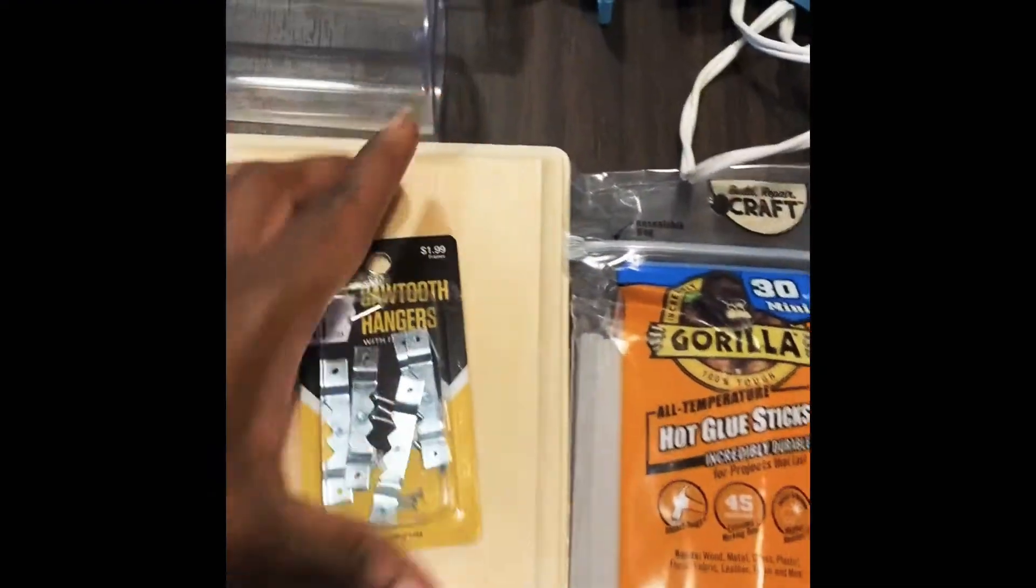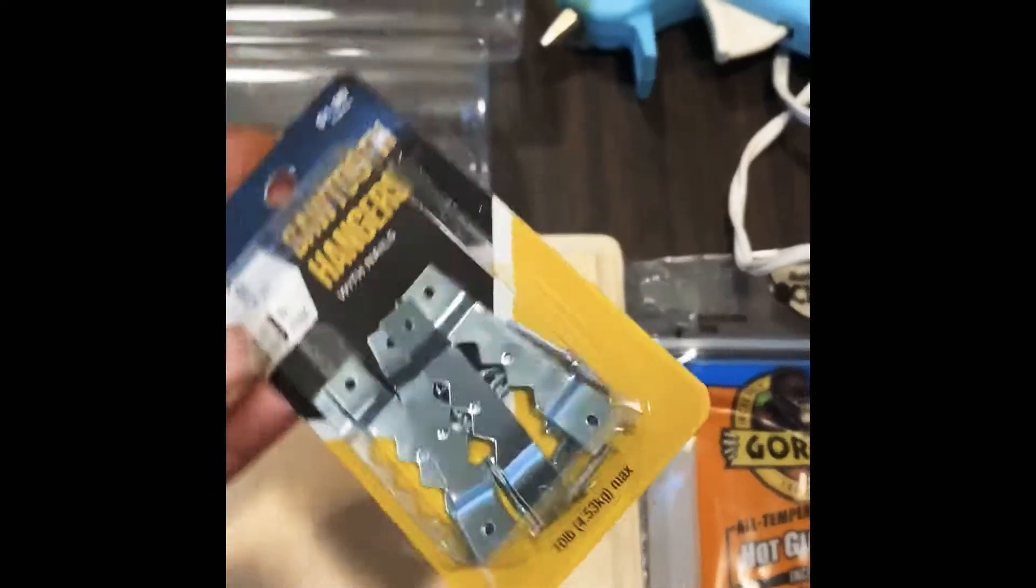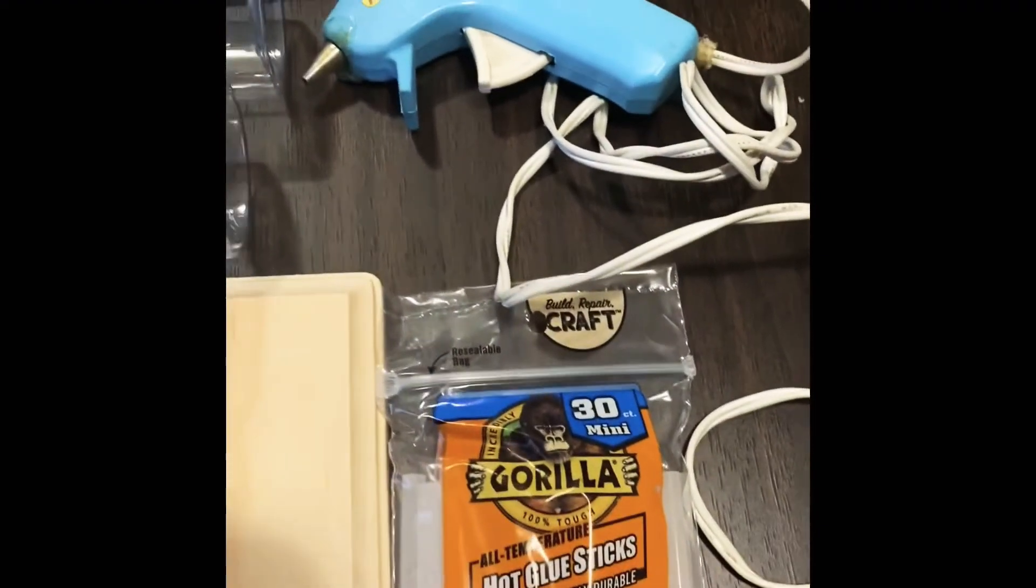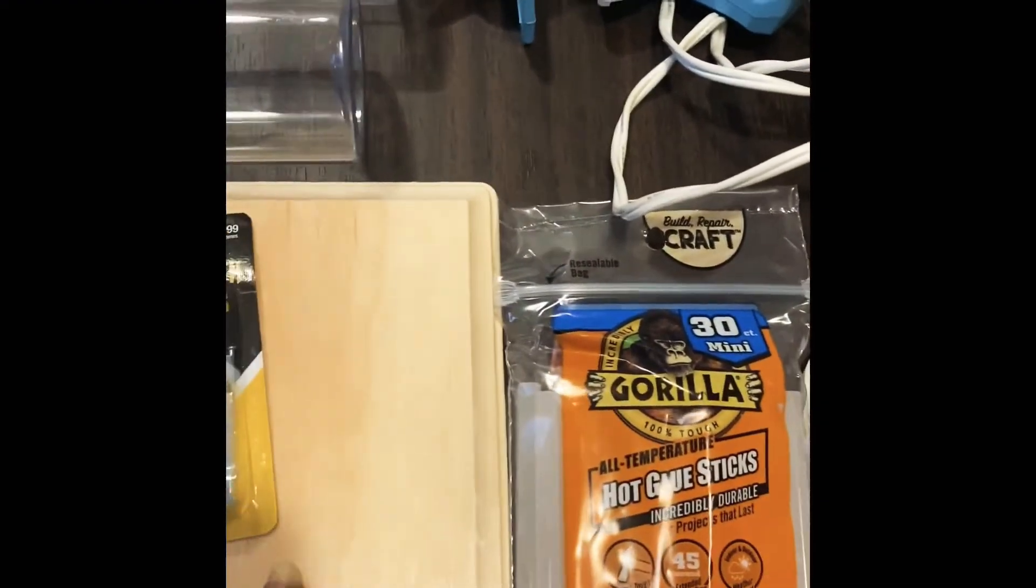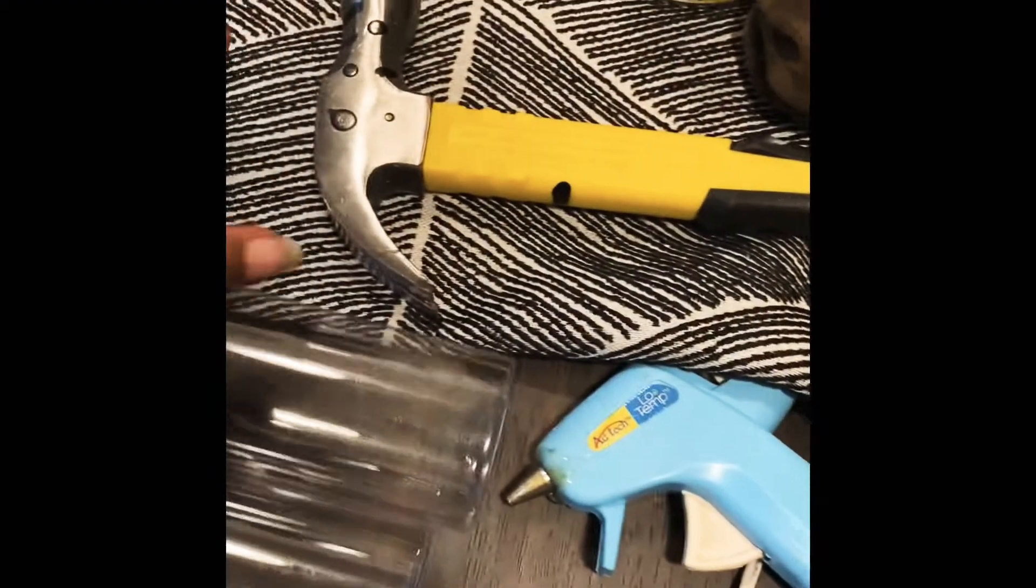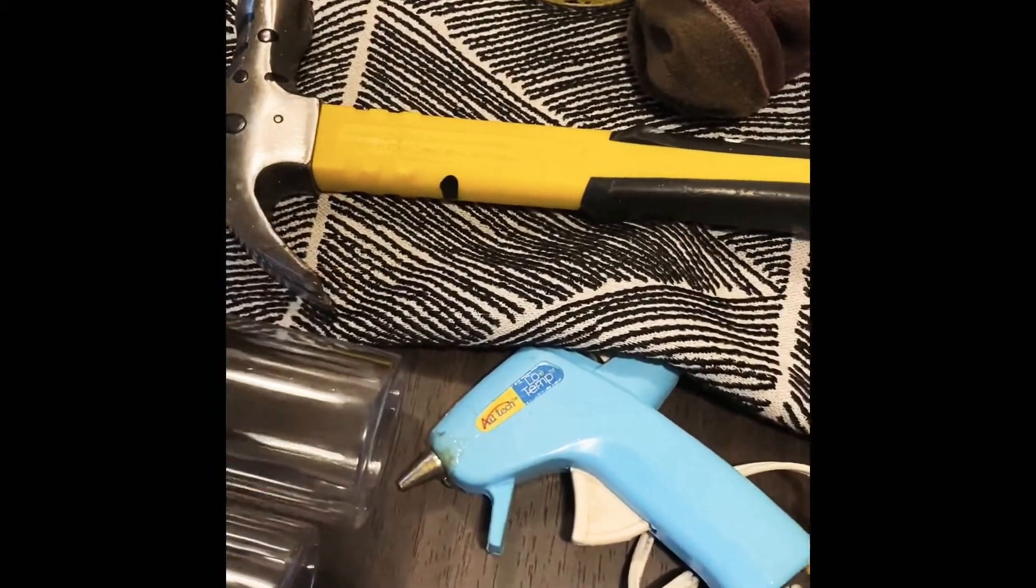I got my magnets, I have my sawtooth hangers. This you will add on to the back of it so that you can hang it on the wall. I have my Gorilla hot glue sticks that will have a good solid hold along with my glue gun.